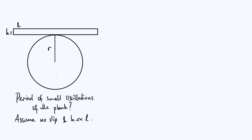The question is basically to find the period of small oscillations of the plank. You can imagine that you set up this system in equilibrium, give the plank a small push at one end, and then it's going to undergo angular oscillations. We want the frequency or the period of those oscillations.